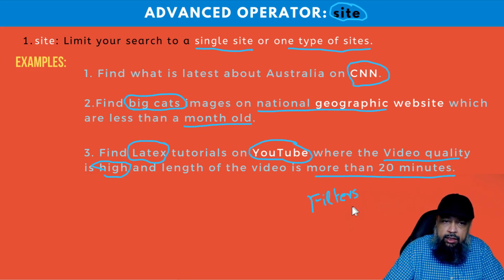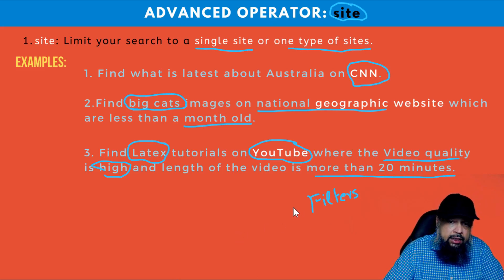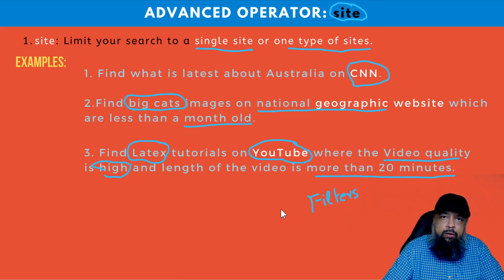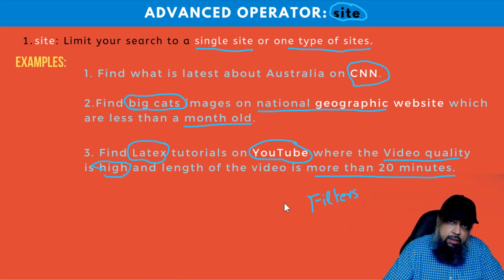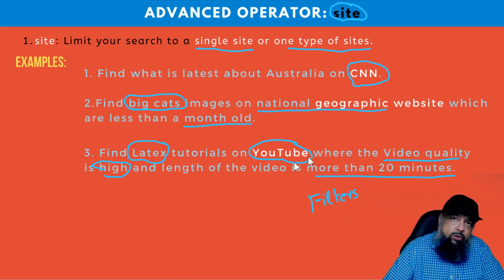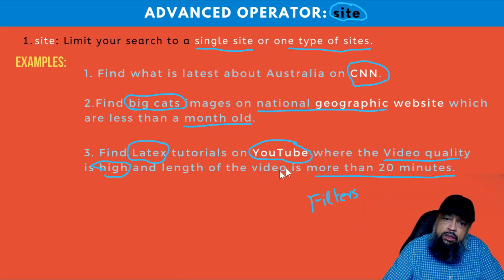These filters are available for images, for videos, and for other tools. Every category has different filters — the filters available for videos are different from those available for images, because in videos we want to know how long the video is, while in images we want to know whether it's art or a photo and what kind of image it is. These filters depend on the category.